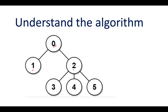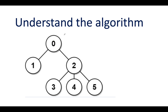Let's calculate the distance of each index from all other indexes. Starting with the zeroth node: the distance from one is one, from two is one, from three is two, from four is two, and from five is two. This adds up to a total of eight.